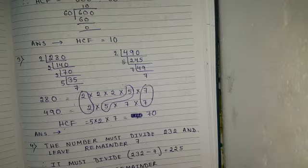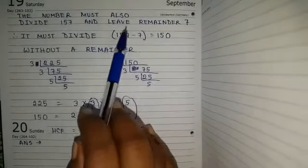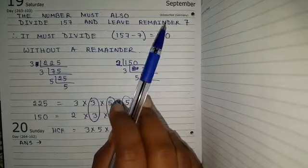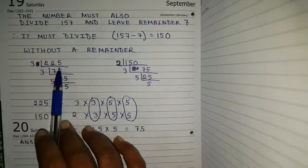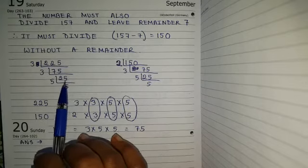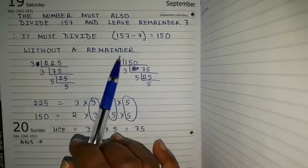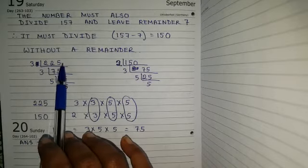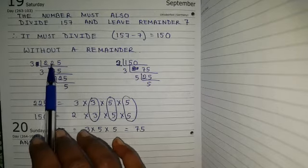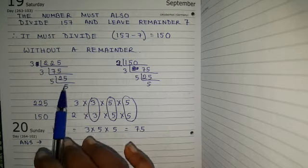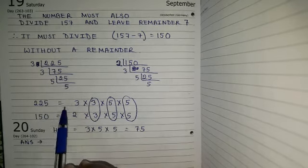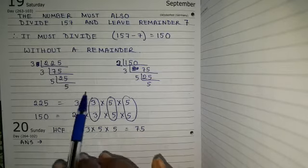Our given numbers are 232 and 157. First subtract 7 from 232, getting 225. Then subtract 7 from 157, getting 150. Now use the prime factorization method to find HCF. 225 is not divisible by 2, so start with 3: 3 seventy-fives are 225, then 3 twenty-fives are 75, then 5 fives are 25. 5 is a prime number, so stop here. So 225 equals 3 into 3 into 5 into 5.